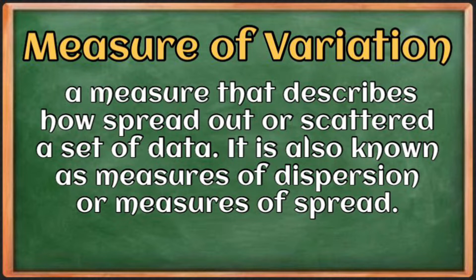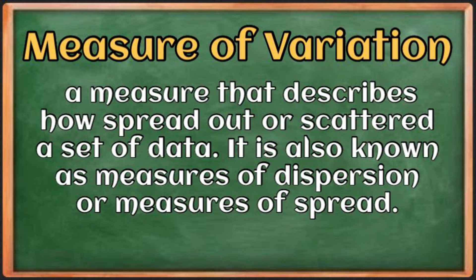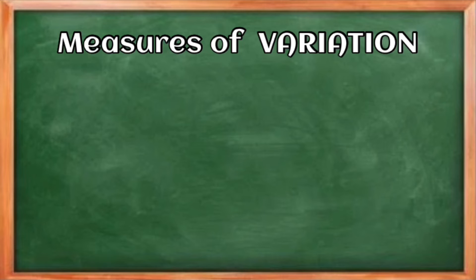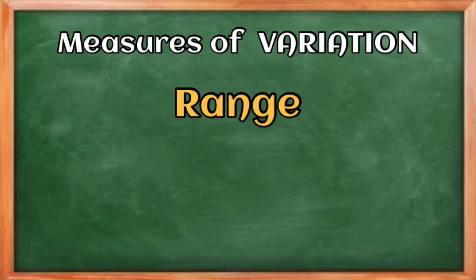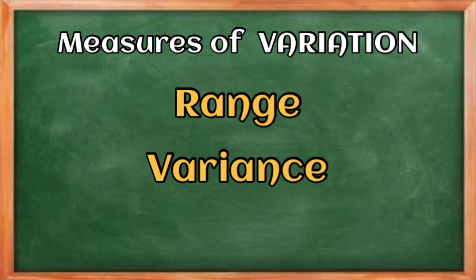In addition to central tendency — which includes the mean, median, and mode — every data set can be characterized by its variation. A measure of variation describes how spread out or scattered a set of data is. It is also known as the measure of dispersion or measure of spread. Some common measures of variability are the range, variance, and standard deviation.